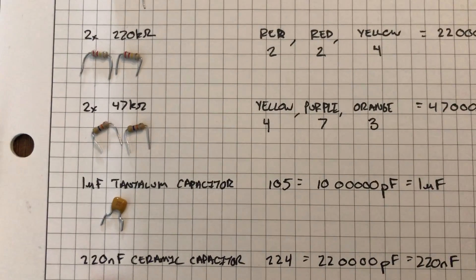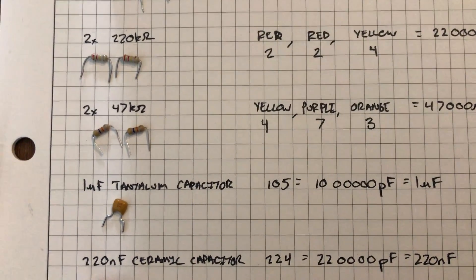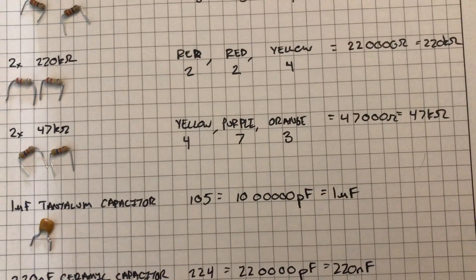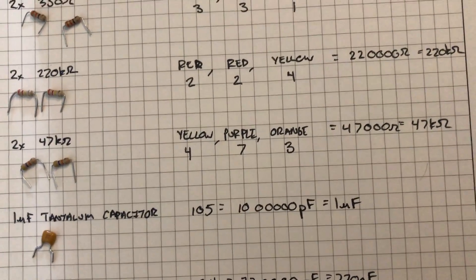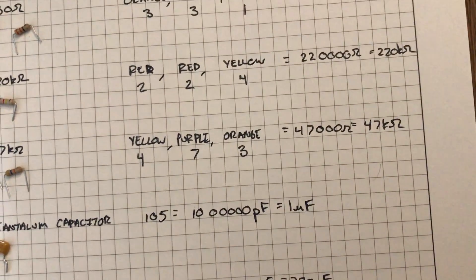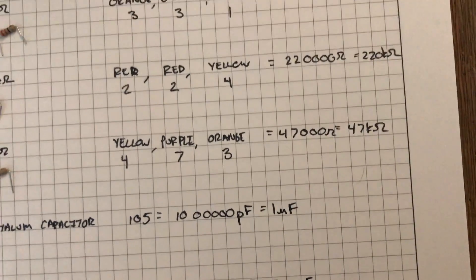The next component I have is two 47 kilohm resistors already cut and trimmed. The color code for 47k is yellow purple orange or 473, so that's 47 with three zeros behind it, which is a 47 kilohm resistor.